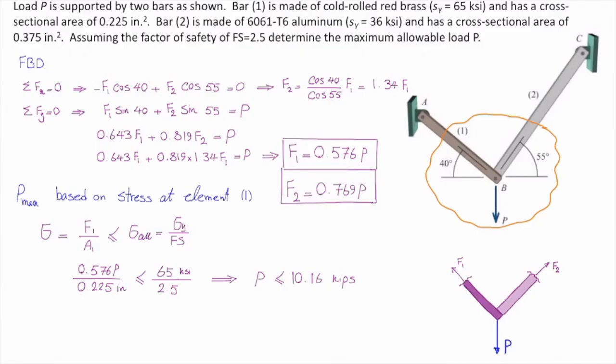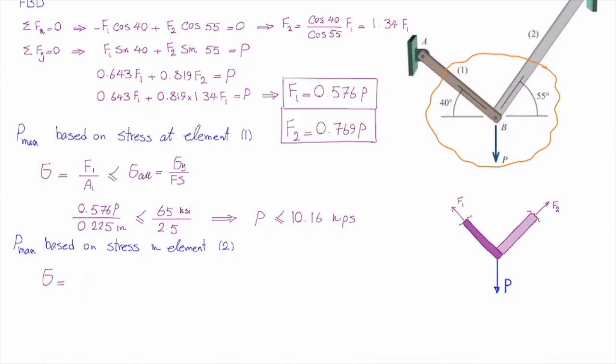We will do the same procedure for the other element. In element number 2, we will use the same design equation but with different numbers. So, stress again is force over area. I'm using force and area of that element. And that should be smaller than the allowable stress, which is sigma y divided by factor of safety.